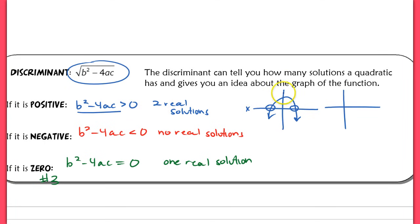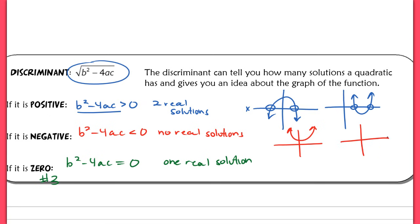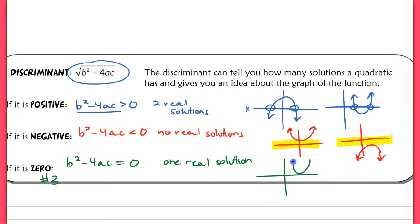You would see a parabola that crosses the x-axis twice. When you have no real solutions, that parabola never crosses the x-axis — it could be above or below the x-axis and opening in either direction, but it never touches that line. When the discriminant equals zero, you get one real solution because the parabola touches the x-axis at one point — its vertex is exactly on the x-axis — and then bounces back off.